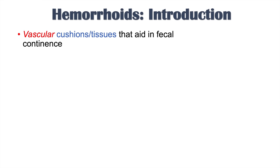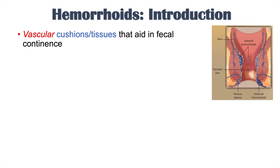But first, what are hemorrhoids? Hemorrhoids are vascular cushions or tissues that aid in fecal continence. Everyone has these vascular cushions or tissues, but the problem arises when they become enlarged or irritated — people can then experience what we call hemorrhoidal disease.